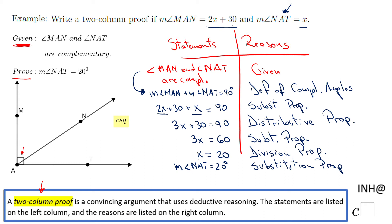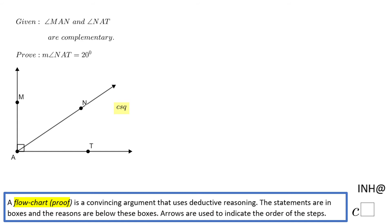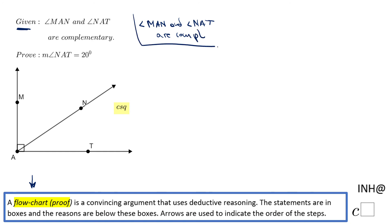On the next slide I'll show you the same problem, but now using what is called a flowchart — another way to write a proof using boxes and arrows. The first thing I'll start with is the same given statement, so I need a big box. The statement is: angle MAN and angle NAT are complementary. This is my first box, which is given to us.